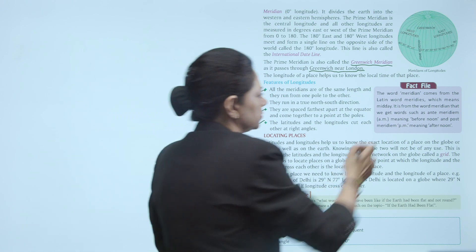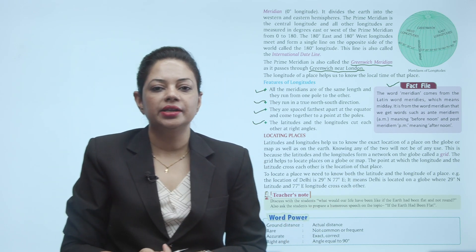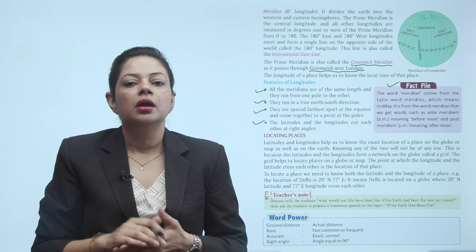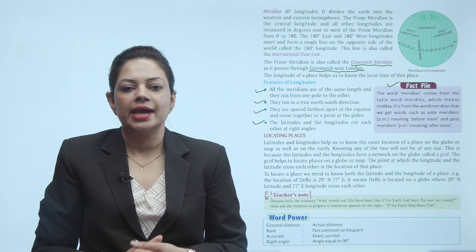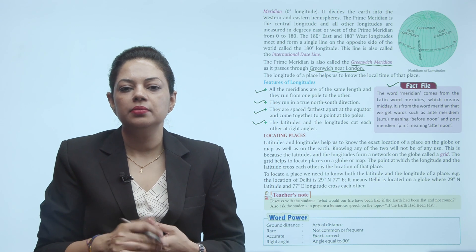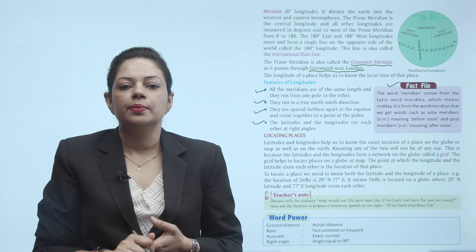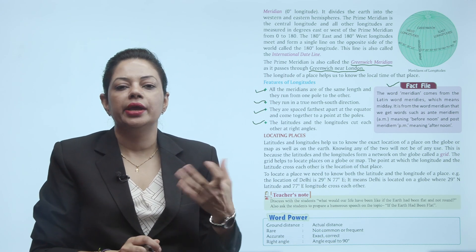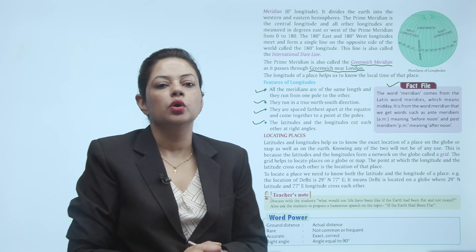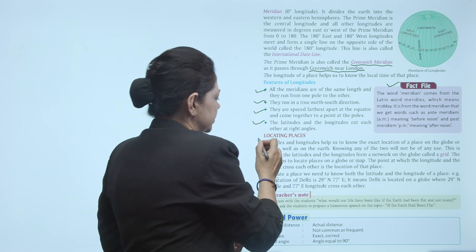Fact file: The word 'meridian' comes from the Latin word 'meridies' which means midday. It is from the word meridian that we get words such as ante meridian (AM, meaning before noon) and post meridian (PM, meaning afternoon). Yeh 'meridies' Latin word se 'meridian' word liya gaya hai — jisse hum jo AM PM use karte hain time ke liye, woh wahin se describe hue hain.